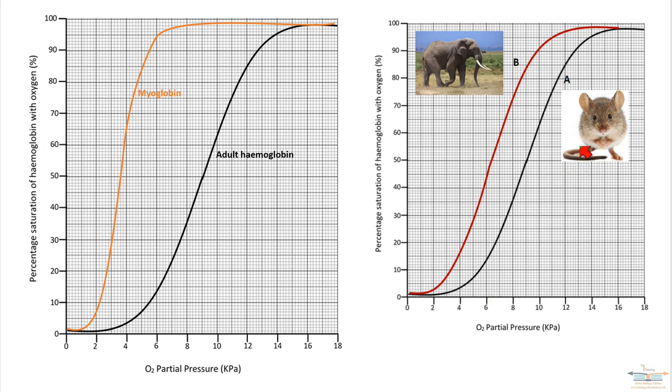The mouse has an oxygen dissociation curve to the right of the elephant. From previous videos, I've said whenever a curve is to the right, the haemoglobin has a low affinity for oxygen. When the curve moves to the left, the haemoglobin has a slightly higher affinity for oxygen.